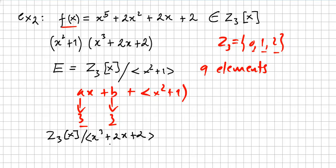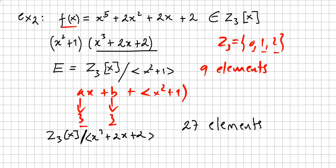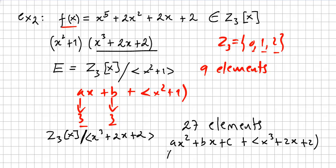We can also build another extension field using the other factor, the cubic polynomial. That field would be the ring of polynomials over Z₃ divided by the ideal generated by x cubed plus 2x plus 2. It would have 27 elements, because the polynomials are of the form ax squared plus bx plus c, with three candidates each for a, b, and c — so 3 times 3 times 3 equals 27.